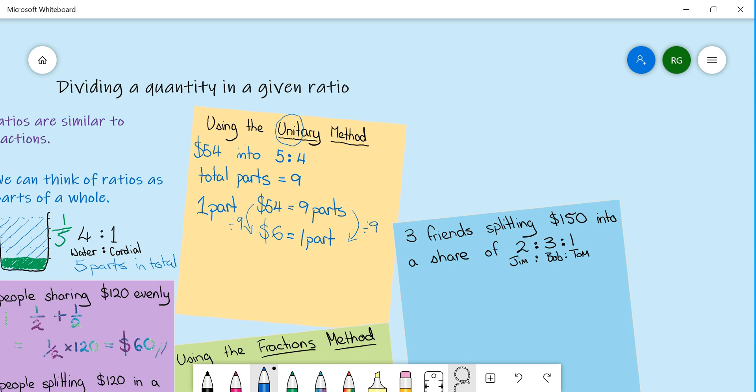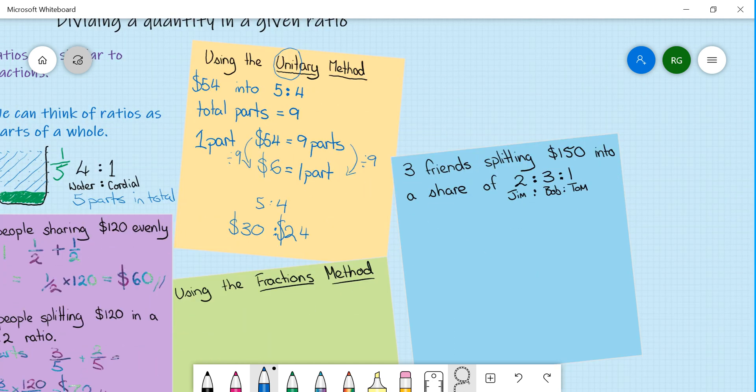One part is six dollars. I can then now work out that in my ratio of five to four that this side is going to be 30 dollars, this side is going to be 24 dollars. That works because when I add them together I equal 54 dollars.